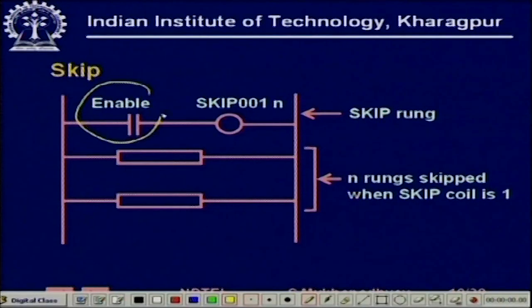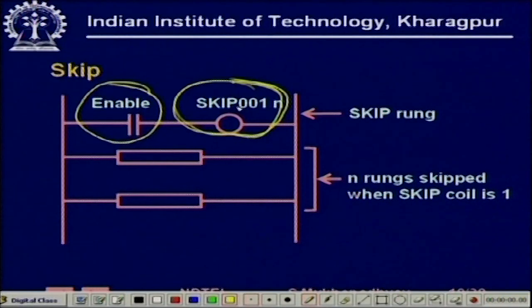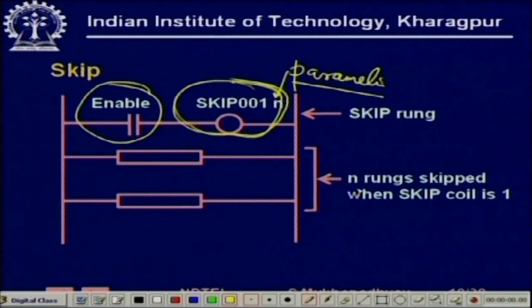Apart from data transfer, very important are program control instructions by which we want to control the execution of rungs — we do not want to execute all rungs of the RLL at all times, but rather skip some or enforce their values. We have a skip facility: when the skip instruction is enabled, the next n rungs will not be evaluated. Skip001 with parameter n means the next n rungs are skipped while this is high.